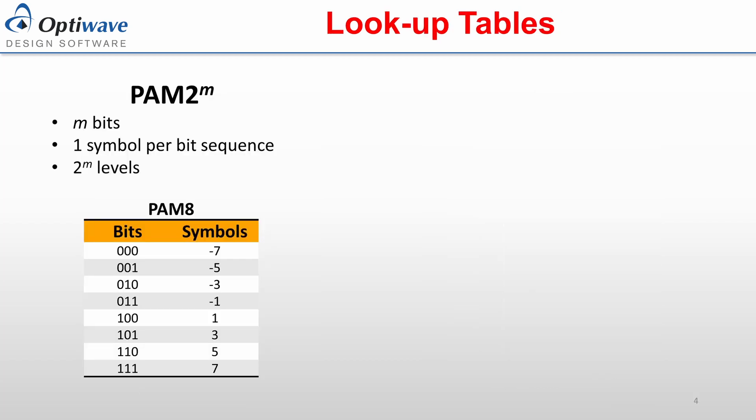Standard PAM formats can be fully described using the number of bits per symbol, represented as M. A lookup table is then used to map the M bits to an individual symbol, for a total of 2 to the power of M symbols. An example for PAM8 is shown.